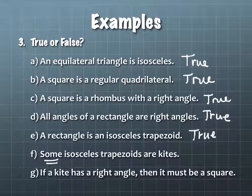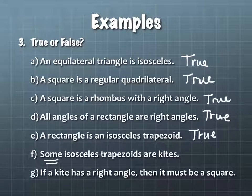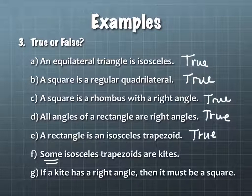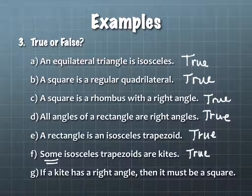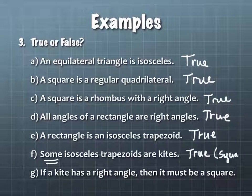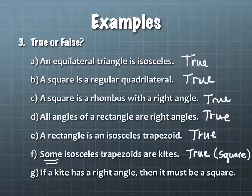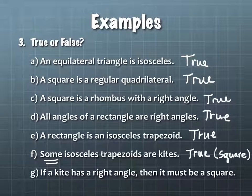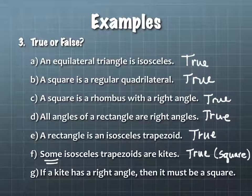Some isosceles trapezoids are kites. True — and the shape that makes it work is a square. A square is an isosceles trapezoid, and a square is also a kite. A kite has two pairs of adjacent sides congruent, and the other two adjacent sides congruent — so a square also fits the definition of kite.